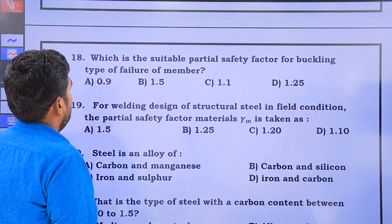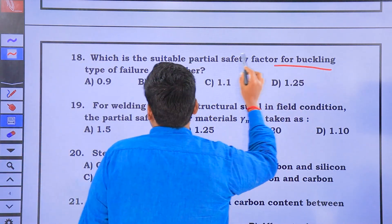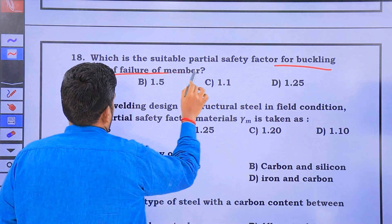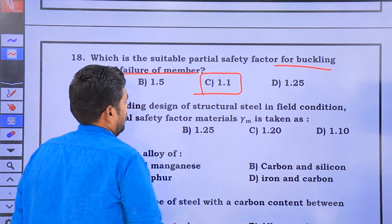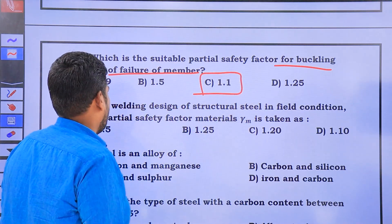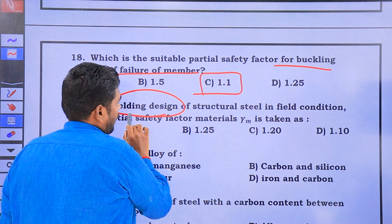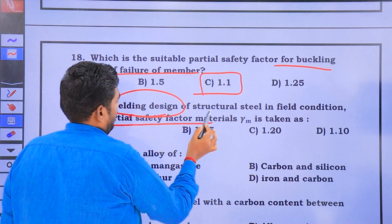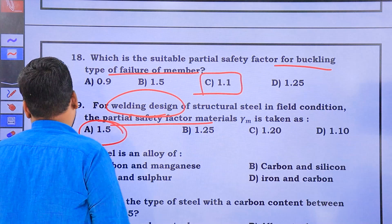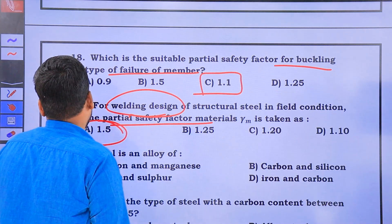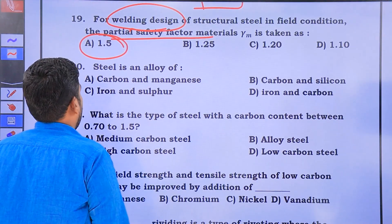The factor of safety for buckling type of failure is 1.1. The partial factor of safety for welding design is 1.5.